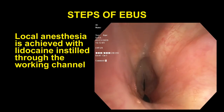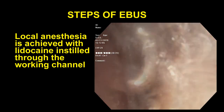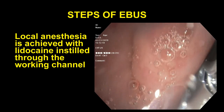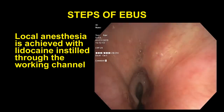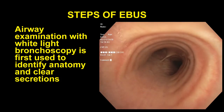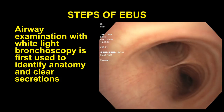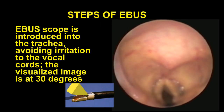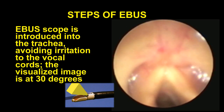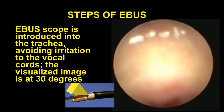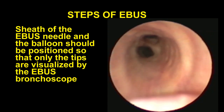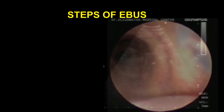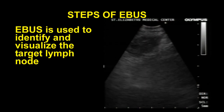White light bronchoscopy is first performed. Local anesthesia is achieved with lidocaine instilled through the working channel at the level of the vocal cords, main carina, and the right and left secondary carina. An airway examination is performed to identify anatomy and to clear secretions. The EBUS scope is then introduced into the trachea, avoiding irritation to the vocal cords. The visualized image is a 30-degree view with the Olympus scope. The sheath of the EBUS needle and the balloon should be positioned so that only the tips are visualized by the EBUS bronchoscope. The EBUS scope is then used to identify and visualize the target lymph node.